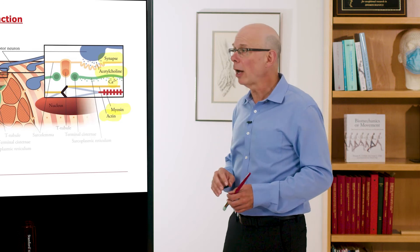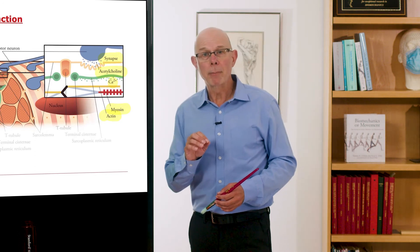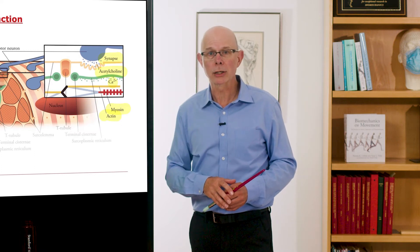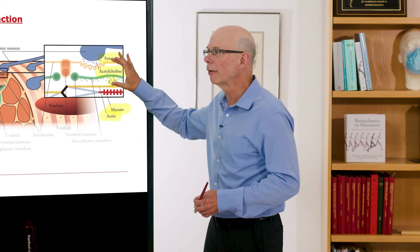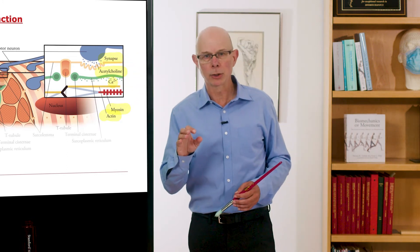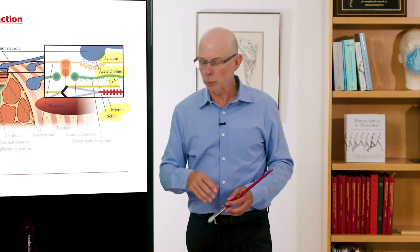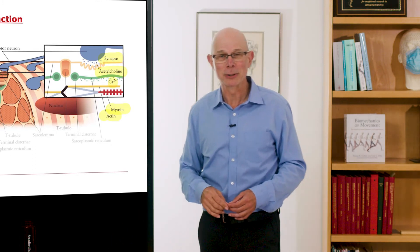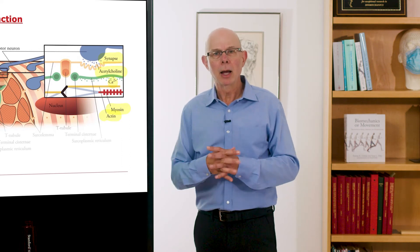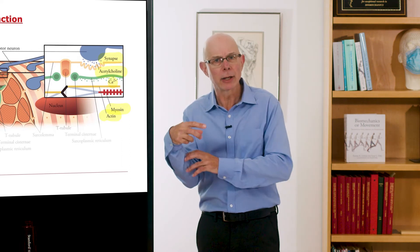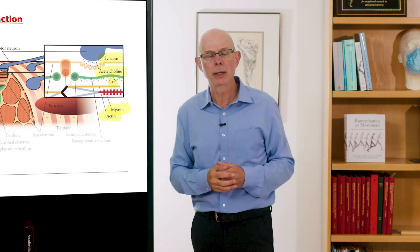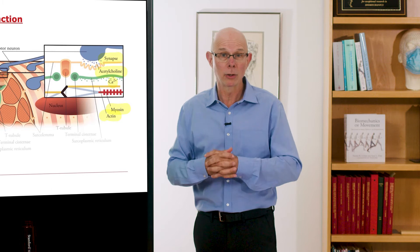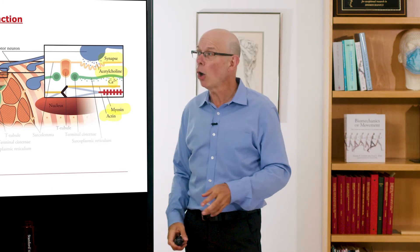An interesting side note: when you inject botulinum toxin — commonly known as Botox — it blocks the release of acetylcholine, essentially paralyzing the muscle. That can be beneficial if a muscle is spastic and you're trying to reduce that spasticity. People typically inject it into their face, which makes the face smooth but relatively lifeless.